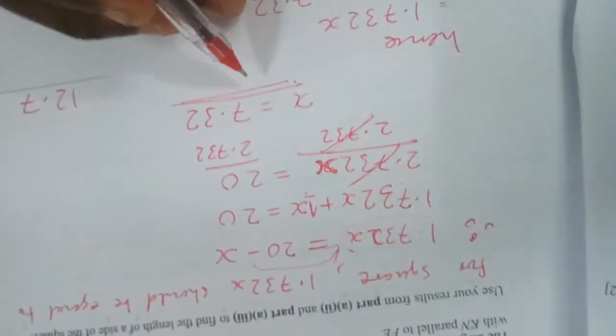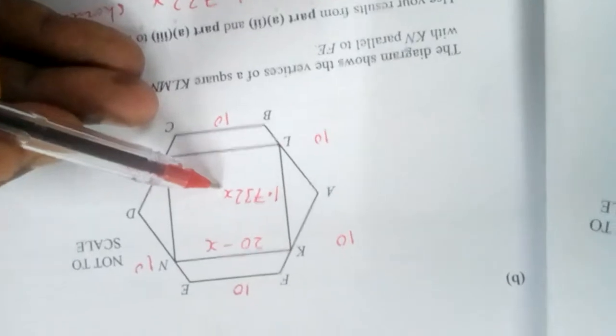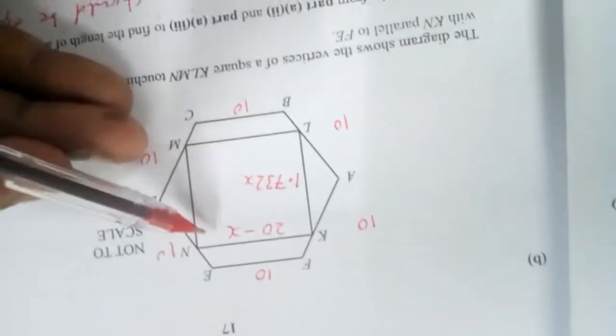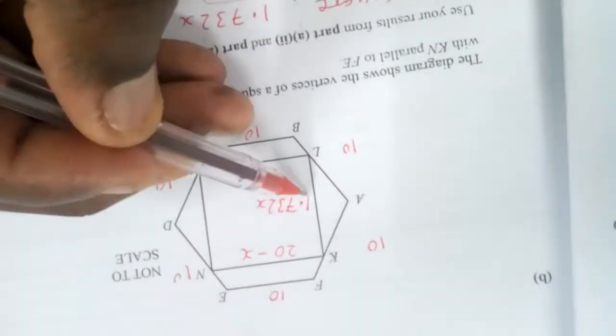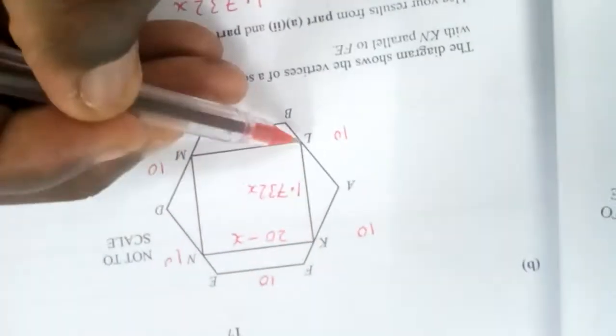Therefore, if we have obtained x, and we say this side is 1.732x, and the other side is 20 minus x. Meaning what? If I multiply 1.732 times x, I will get the length of this side.